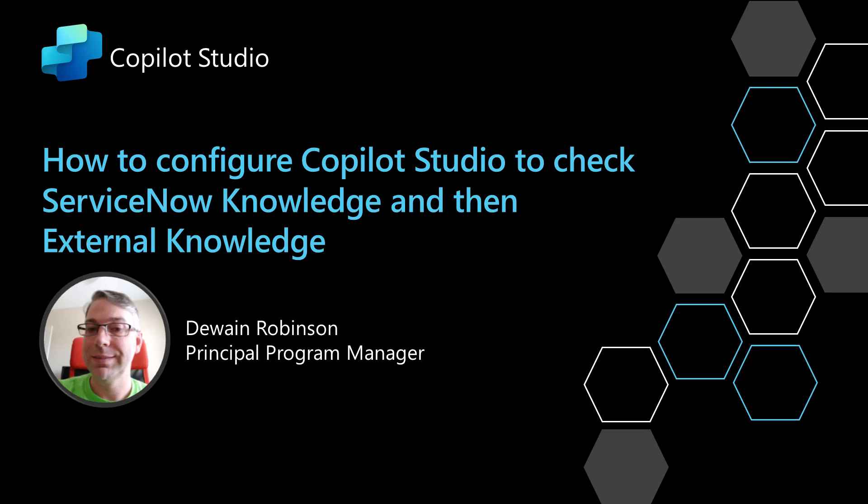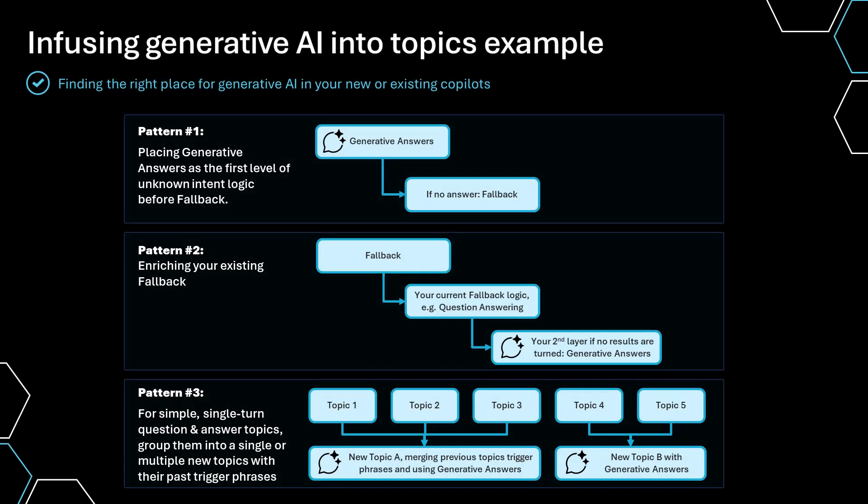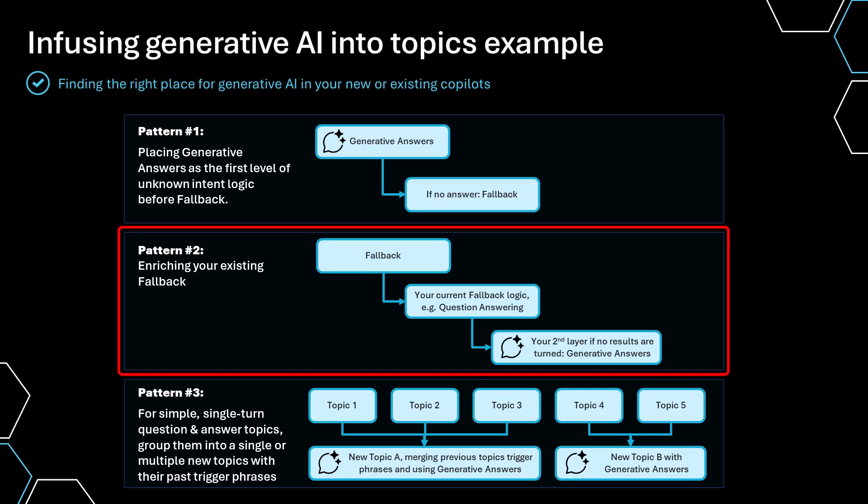In this video, I'm going to show you how to configure Copilot Studio to check a ServiceNow knowledge base and then go on to check external knowledge bases in the case that it doesn't find something in your internal ServiceNow knowledge base. In an earlier video, I explained the different fallback patterns that you may be able to use. In this case, we will be using Pattern 2, which is we're going to use the fallback to an internal knowledge base and then go to a second layer and use generative answers again, but over public knowledge.